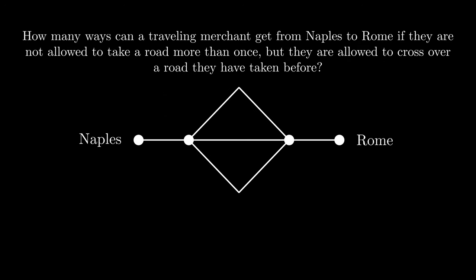I have a network of roads connecting Naples to Rome. How many ways can a traveling merchant get from Naples to Rome if they are not allowed to take a road more than once, but they are allowed to cross over a road they have taken before? Take a minute and give the problem a try.